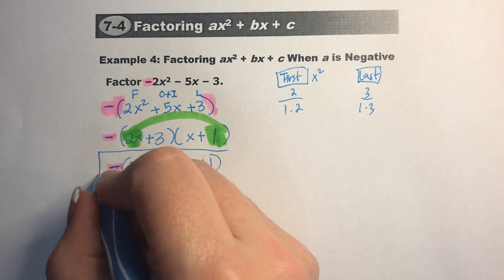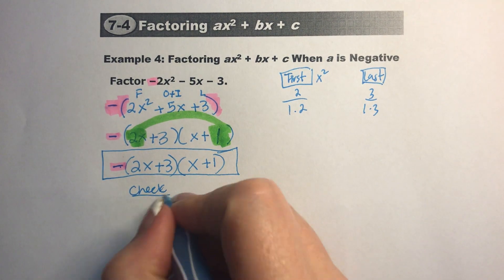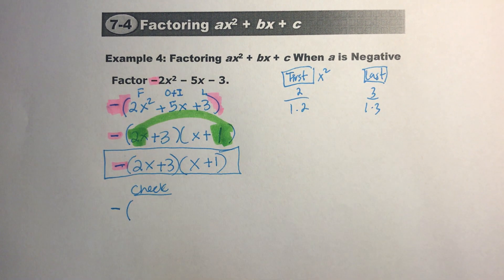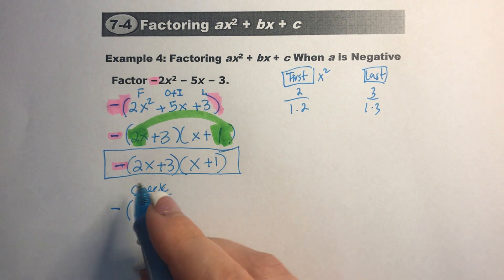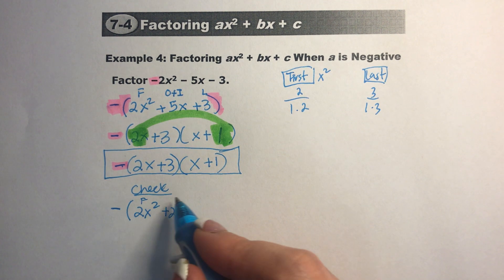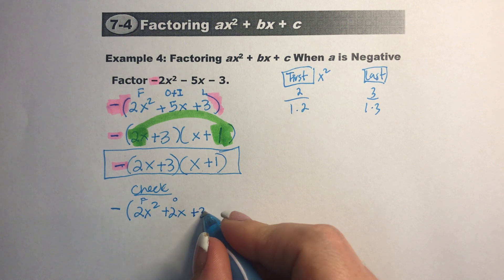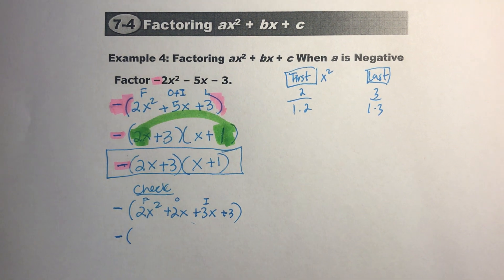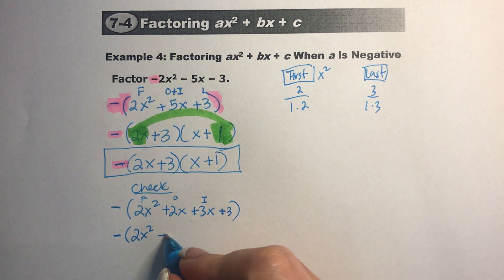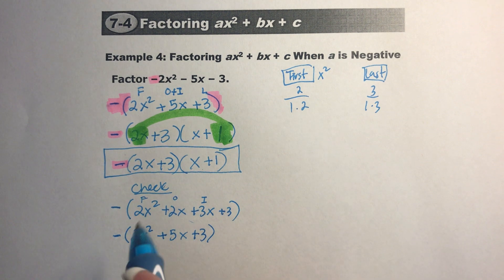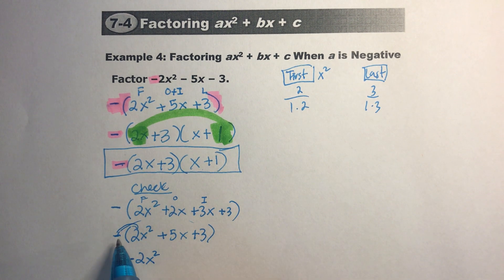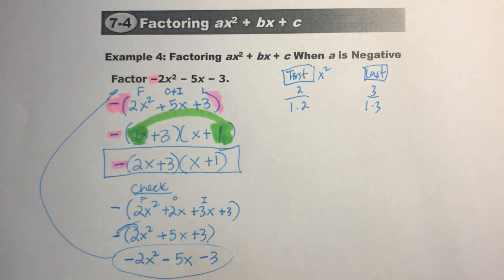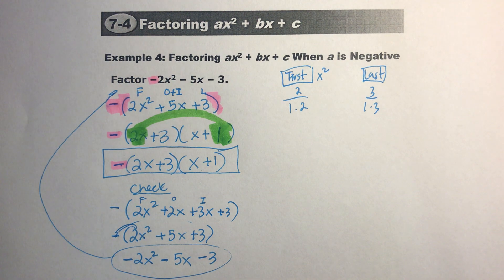Let's go ahead and check it. Keeping the negative on the outside: 2x times x is 2x squared, 2x times 1 is positive 2x (outside), 3 times x is positive 3x (inside), and 3 times 1 is 3 (last). Simplifying: negative times (2x squared plus 5x plus 3). Distributing the negative gives negative 2x squared minus 5x minus 3. Yes — that matches what I started with. So I did it correctly!